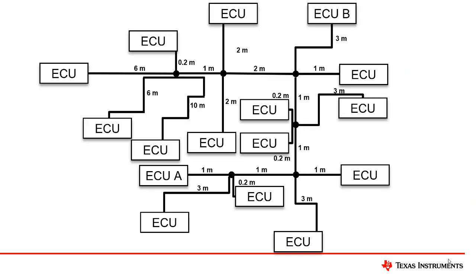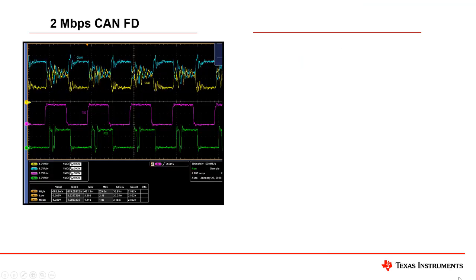Let's look at a basic demonstration of CAN-SICK versus CAN-FD. Here we have a 16-node network with both CAN-SICK and CAN-FD transceivers present. The transceivers are connected via multiple different-length cabling in a STAR topology. For this demo, we will be transmitting and receiving CAN frames at 2-megabit-per-second and 5-megabit-per-second. We'll start with a look at what the data traffic looks like at 2-megabits-per-second.